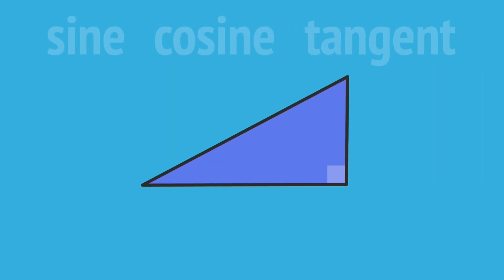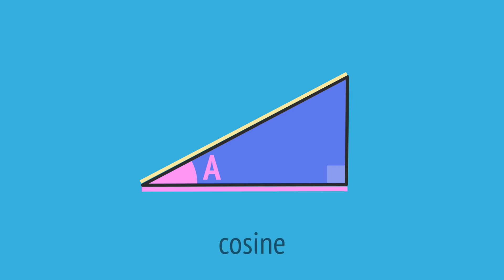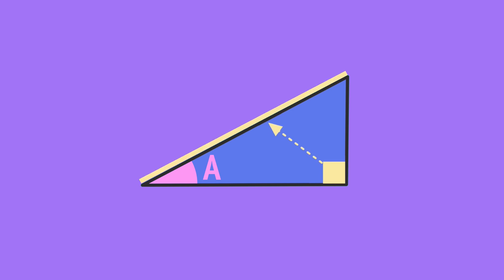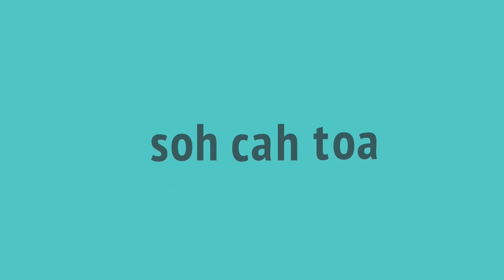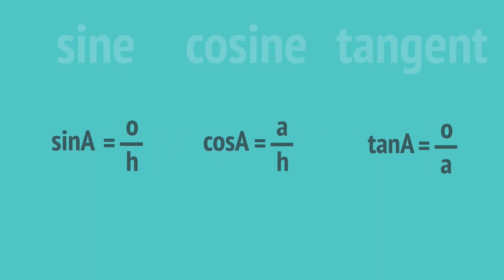In this video, we've introduced three trig ratios for right-angled triangles: the sine, cosine, and tangent. We've seen how to label the sides — hypotenuse, opposite and adjacent — relative to an angle in the triangle. And we've used the mnemonic SOH-CAH-TOA to write these ratios for any right-angled triangle.